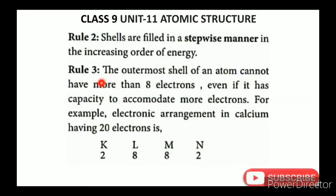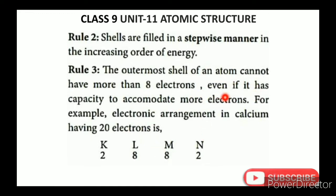Rule number 3: The outermost shell of an atom cannot have more than 8 electrons, even if it has the capacity to accommodate more electrons. This is the rule for the outermost shell regardless of its theoretical maximum capacity.